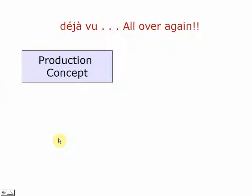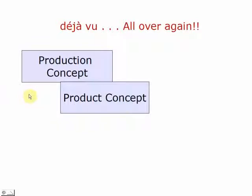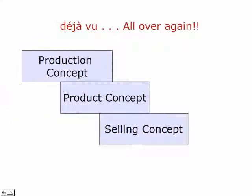It all started with something called the production concept. In this case, the only objective of a company was to mass produce the product so that it would be cheap enough for people to buy. That worked for a while, but after a bit it did not, and then they started looking at quality — hence the product concept, where the focus was on quality rather than simply quantity.